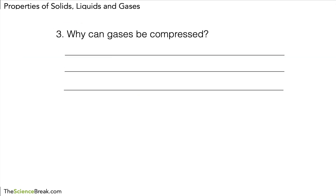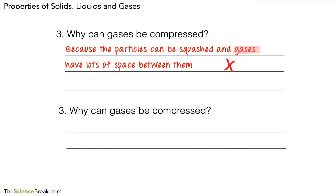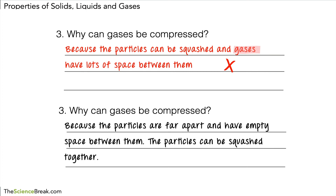Here's a question: 'Why can gases be compressed?' Someone has written: 'because the particles can be squashed and gases have lots of space in between them.' They're talking about the properties of the gas and not how the particles behave or are arranged, so this would not score. A better answer: it's because the particles are far apart and have empty space between them, and the particles can be squashed together. It's important to say 'squashed together' — meaning the particles are brought closer — not that the particles themselves are squashed. That would score the marks.